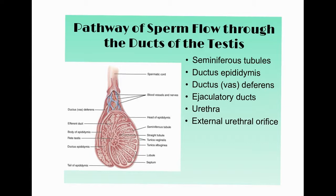Now we'll look at the pathway sperm travels through the male reproductive system — from the actual production of new sperm cells all the way to when it is ejaculated from the body.